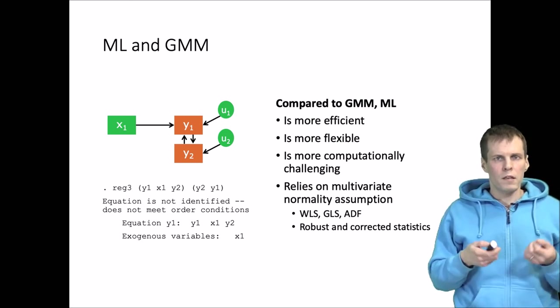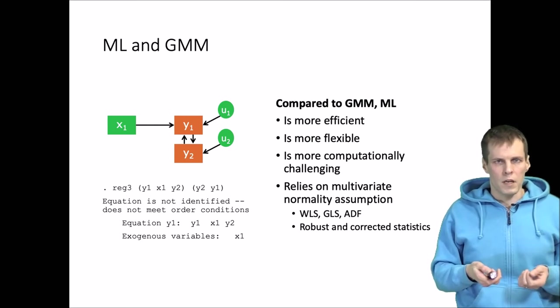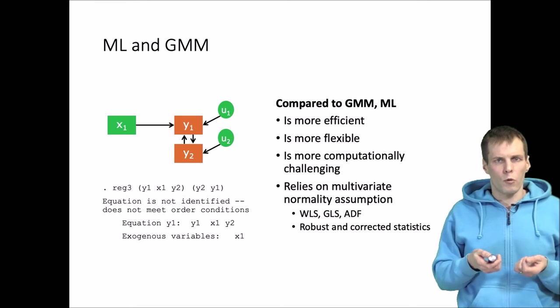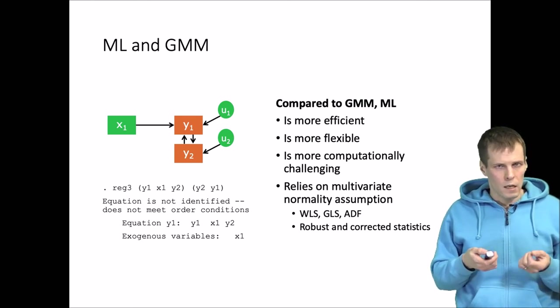Whereas in GMM you always get estimates because it's just a straightforward application of matrix algebra, in maximum likelihood estimation computer has to iteratively define the solution, and these numerical optimization techniques can sometimes fail.